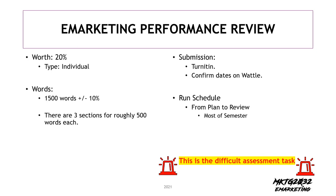In every subject, particularly where there are multiple assignments, there is one task that is harder than the others. In the decision-making behind the scenes on the course, I decided that the eMarketing Performance Review was the best place to put the difficulty factor up to 11. The reason for doing this is that what I want the task to achieve — and what I want you to achieve by doing it — is complicated. You are going to be doing something as a marketer that will be complicated at work, and it's complicated in this assignment. This is a training for a difficult factor.